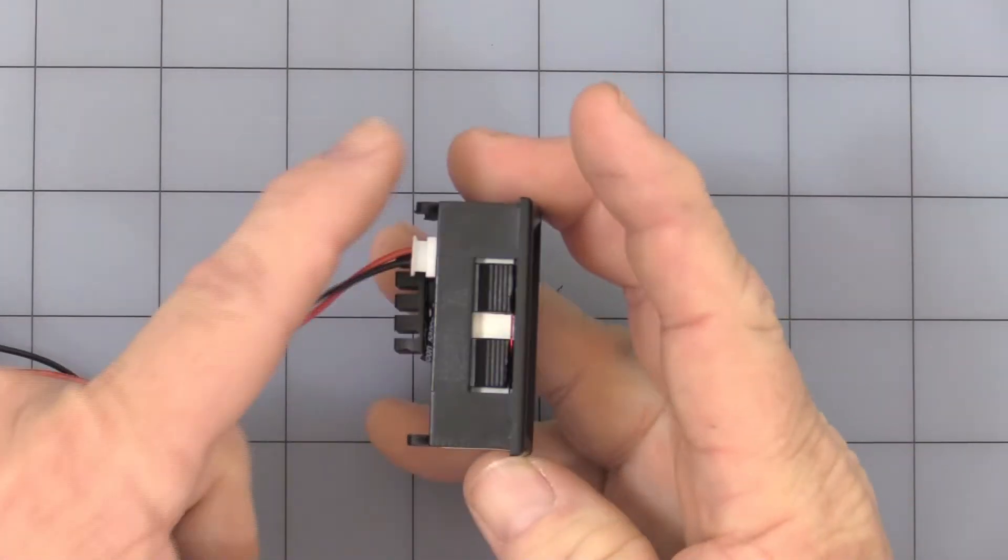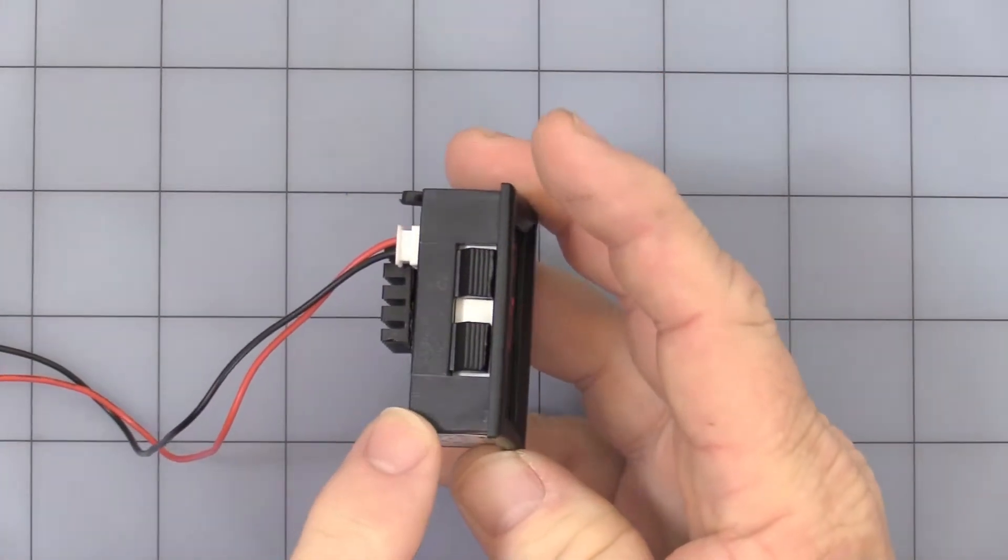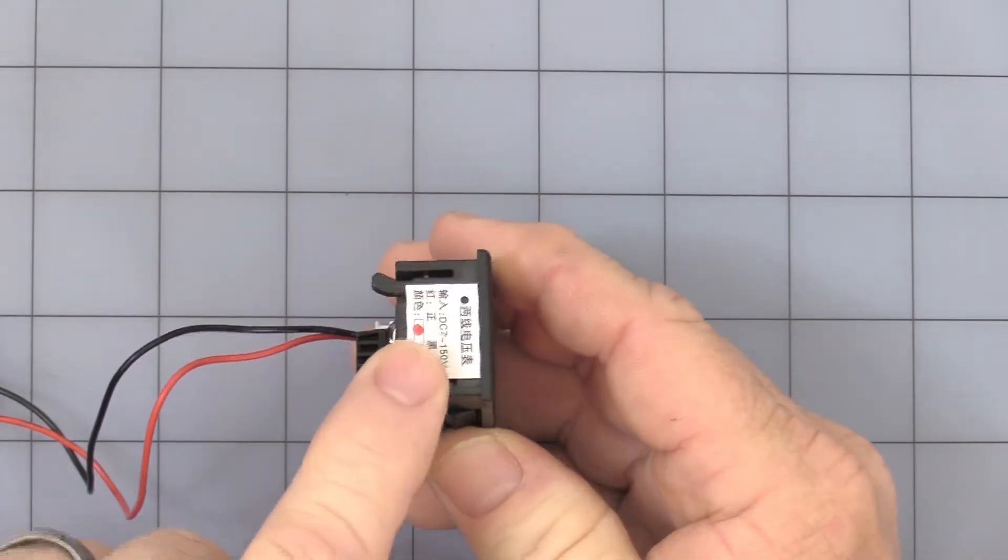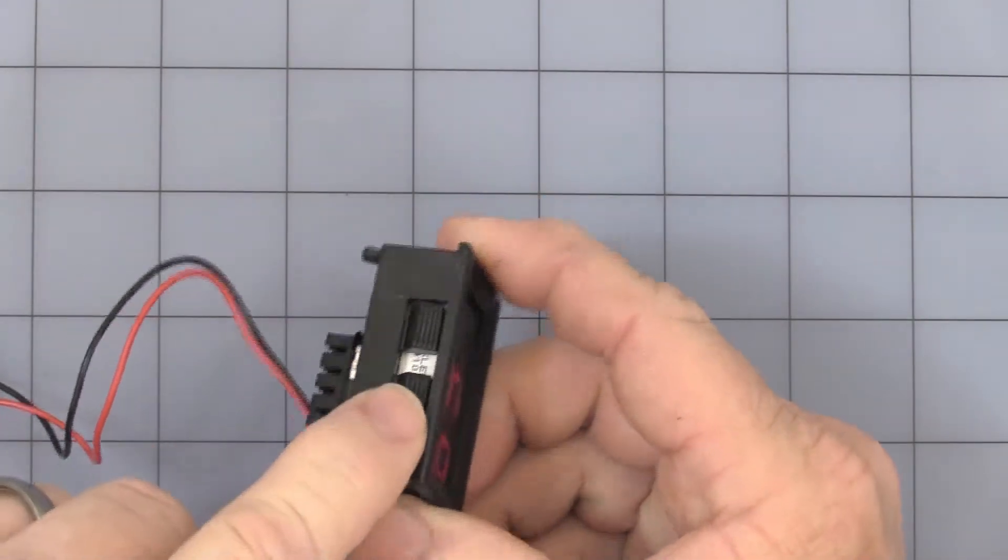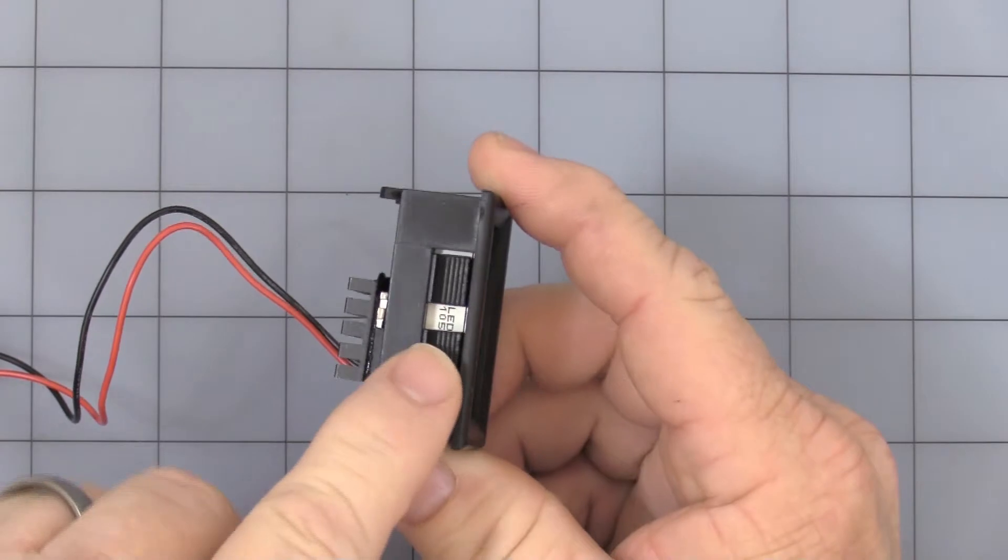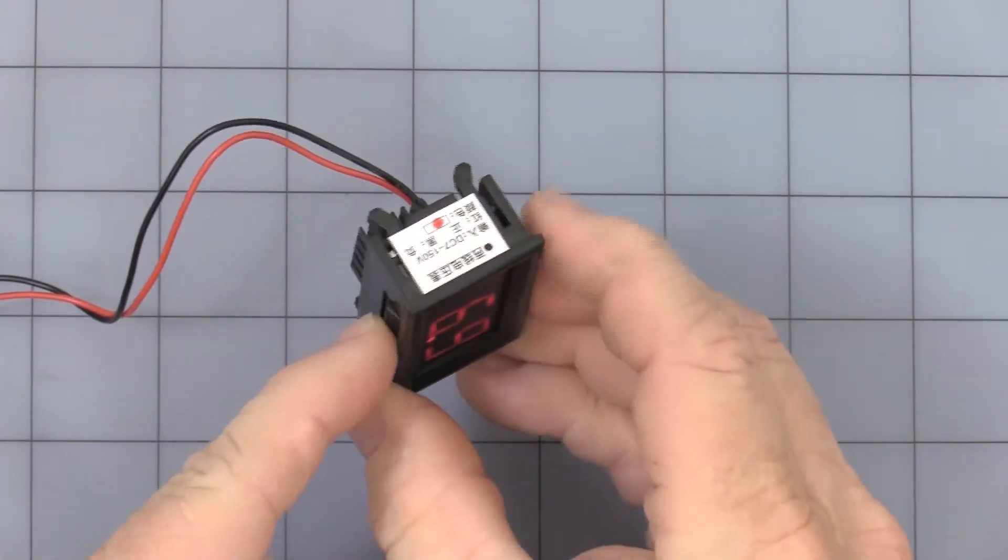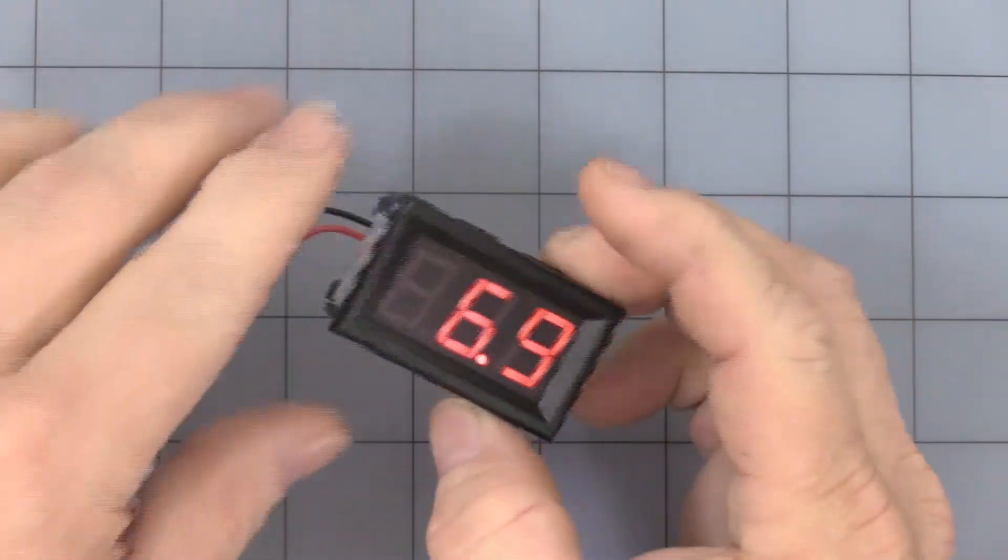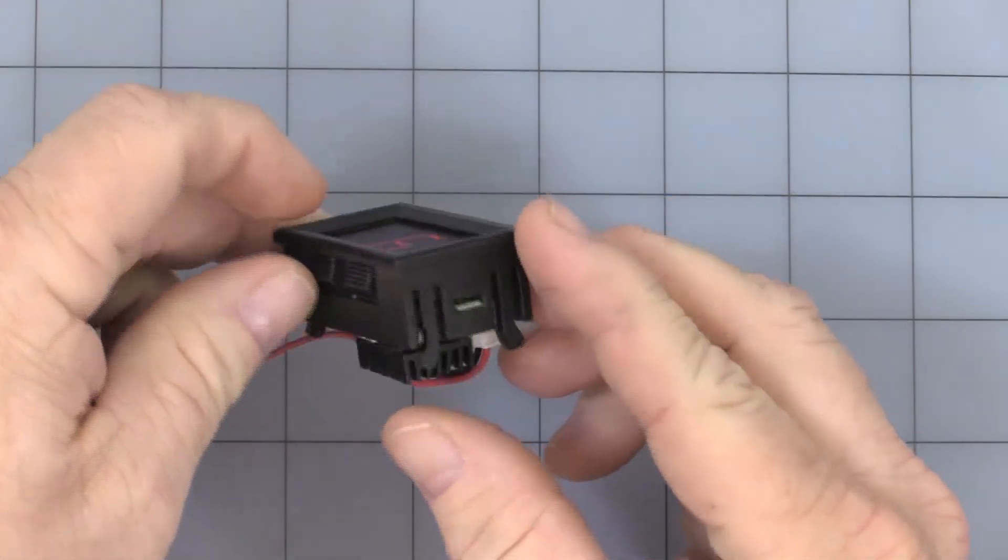It fits in a 45.5mm cutout by 27mm. It has these little tongs, see if I can catch it there in the light, that will help catch and keep it inside the panel.